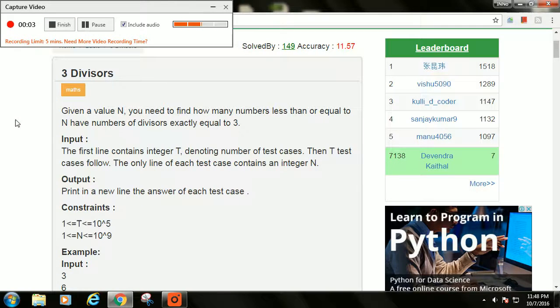This is the problem here, 3 Divisors. The problem states that given a value n, we need to find the numbers less than or equal to n that have exactly 3 divisors.